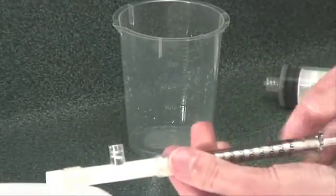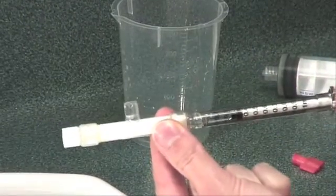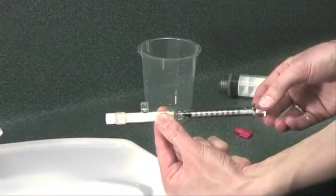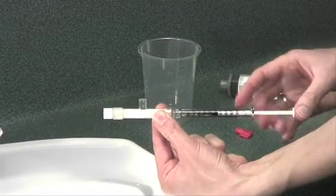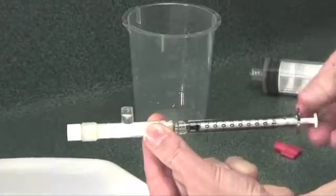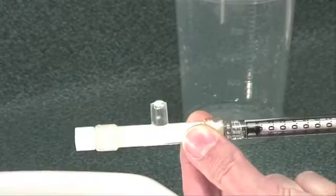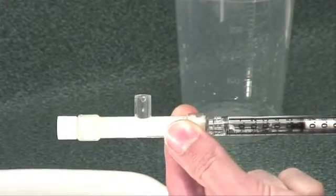While attached to the filter, pull the syringe back to the 0.5ml mark. Now re-inject the content of the syringe back into the filter. Repeat this process three times until the sample content is back in the filter.